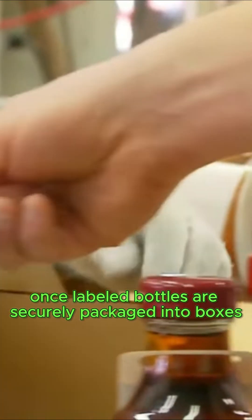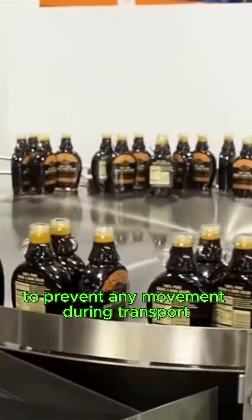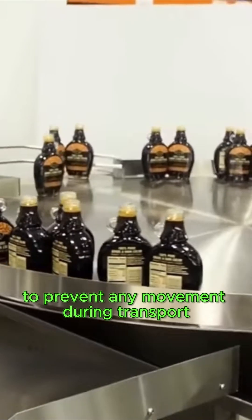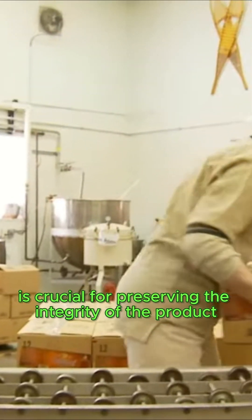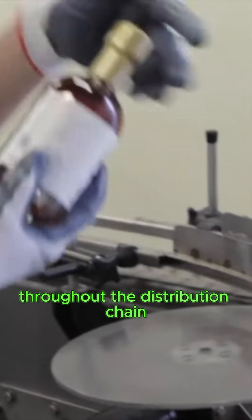Once labeled, bottles are securely packaged into boxes to prevent any movement during transport. This packaging process is crucial for preserving the integrity of the product throughout the distribution chain.